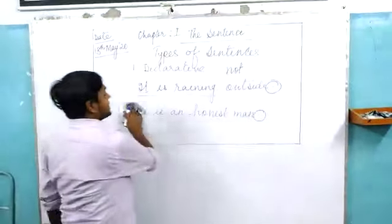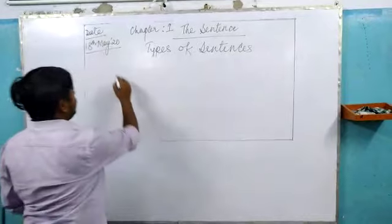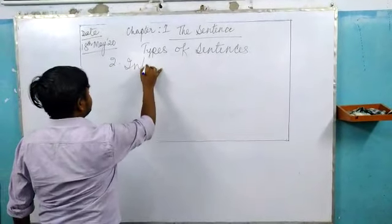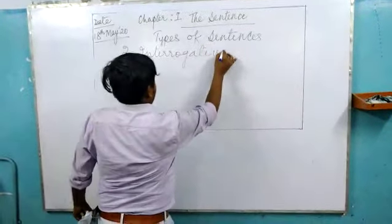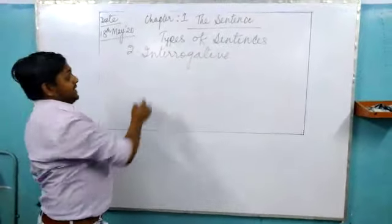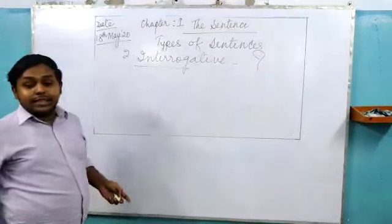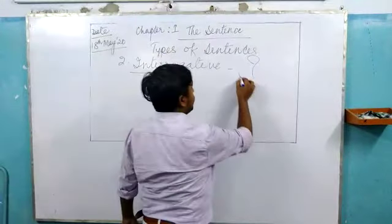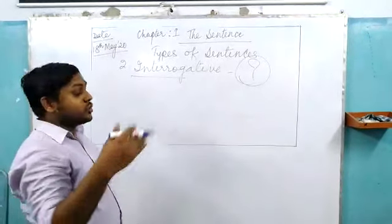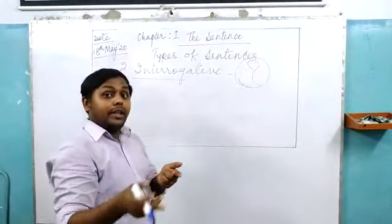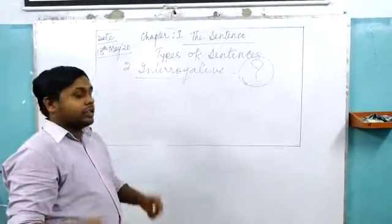Next, we are going to discuss interrogative sentences. What is the meaning of an interrogative sentence? Interrogative sentence means to ask a question. In these types of sentences, we use a question mark. These sentences are used to ask questions to anyone. The questions may be yes/no type, WH type, question tag type, or whatever it can be.